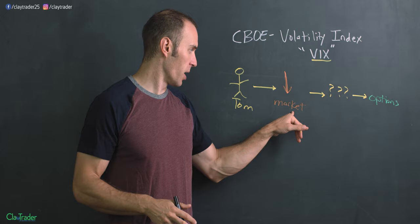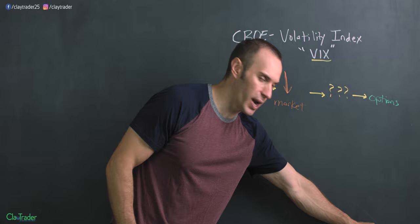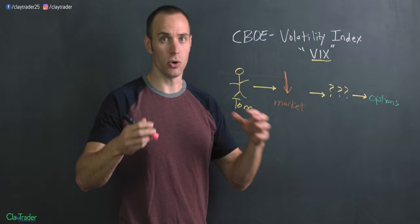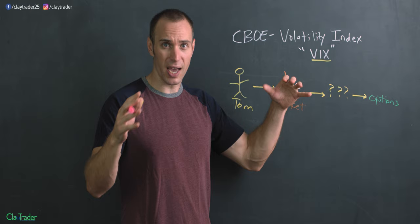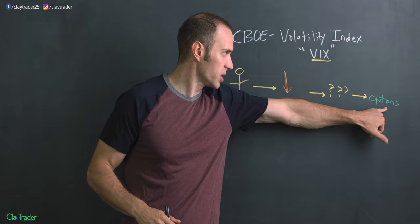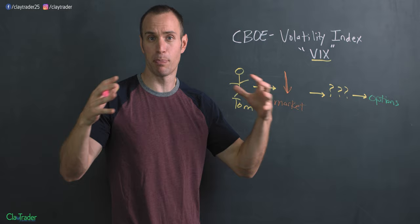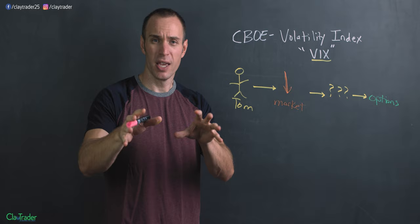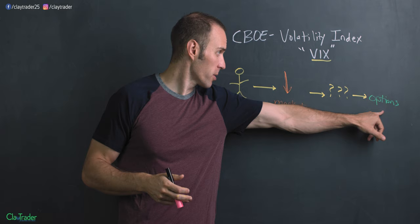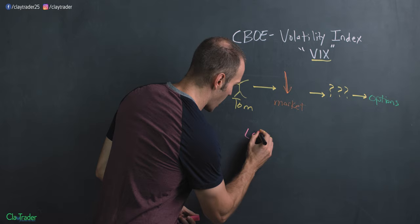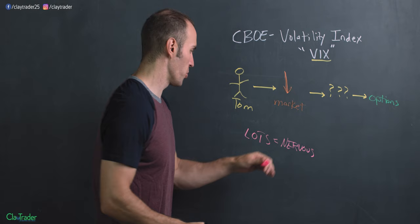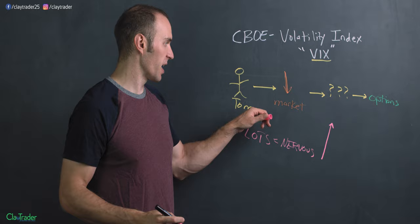So what the VIX is telling us — what happens with the VIX — is if enough people join Tom in thinking: uh-oh, I think the markets are going down, I'm getting a little shaky. Is there anything I can do? And everybody knows that options exist. The more people that start to use these options because they think the market's gonna go down, that's gonna cause these option prices to expand and expand. So when a lot of people are nervous, that is gonna send the VIX higher and higher and higher.